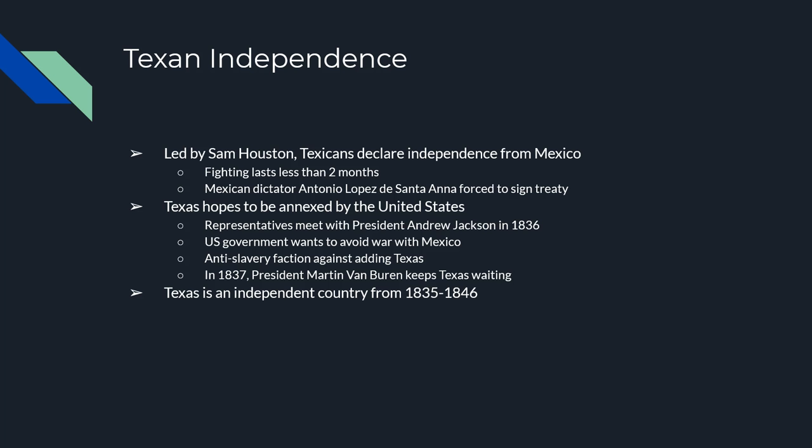Texas's real hope was not to be an independent country — they wanted to become part of the United States. In 1836, Texas representatives met with Andrew Jackson, who said they didn't want Texas because they were trying to avoid war, were busy moving the Native Americans, and the anti-slavery movement was growing. They didn't want to add Texas because of all the slaves that had been brought in, even though Mexico had said no slaves. In 1837, Martin Van Buren didn't answer Texas either. So Texas ended up being an independent country for more than ten years while they waited to join the United States.